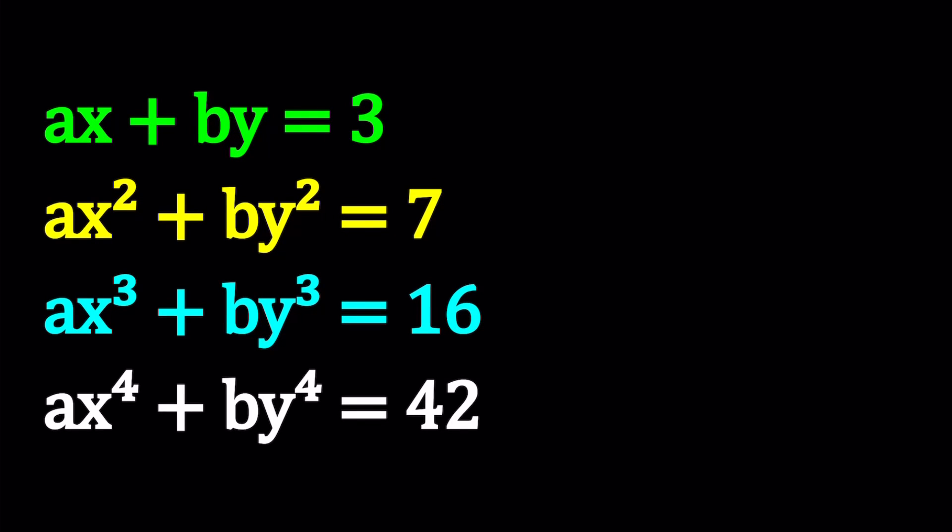Hello everyone. In this video we're going to be solving an interesting system of equations. We have ax plus by equals 3, ax squared plus by squared equals 7, ax cubed plus by cubed equals 16, and ax to the fourth plus by to the fourth equals 42. We're supposed to evaluate ax to the fifth plus by to the fifth.